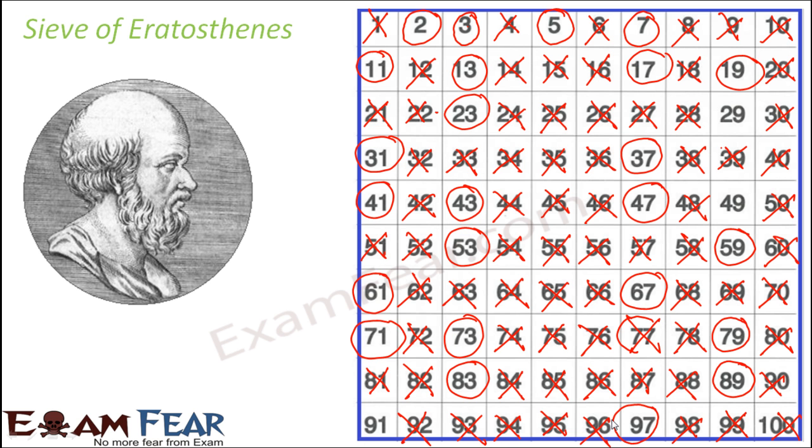So these encircled numbers are the prime numbers and the rest of them are composite numbers. So just by looking at the sieve of Eratosthenes you can very easily say which numbers are prime numbers. So there are very limited prime numbers that exist between 1 to 100. And this is called the sieve of Eratosthenes.